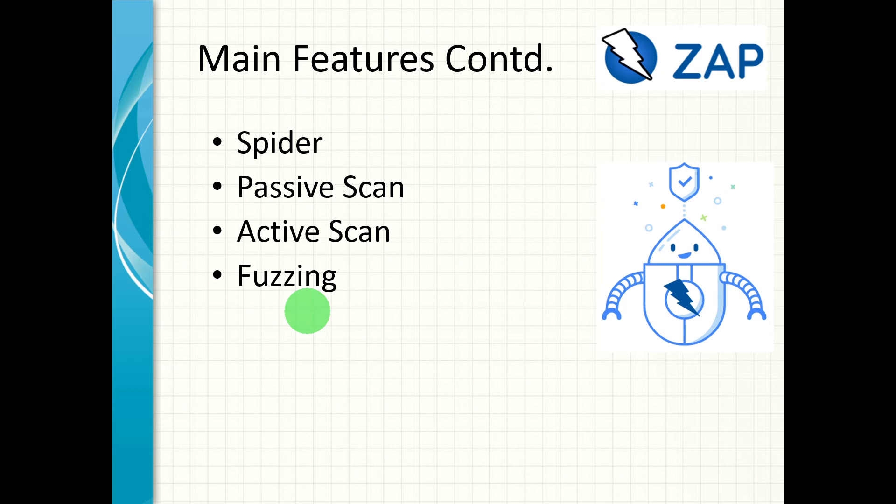ZAP can also be used to fuzz parameters. You can use fuzzing to find more vulnerabilities that scanners could not highlight. We will see how to use fuzzing in future videos.